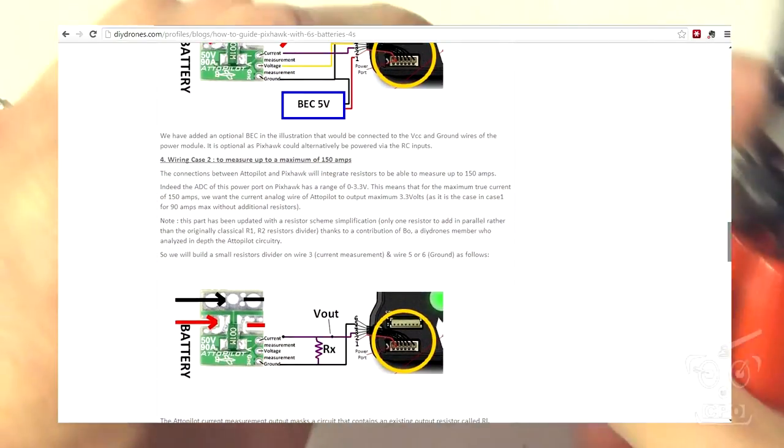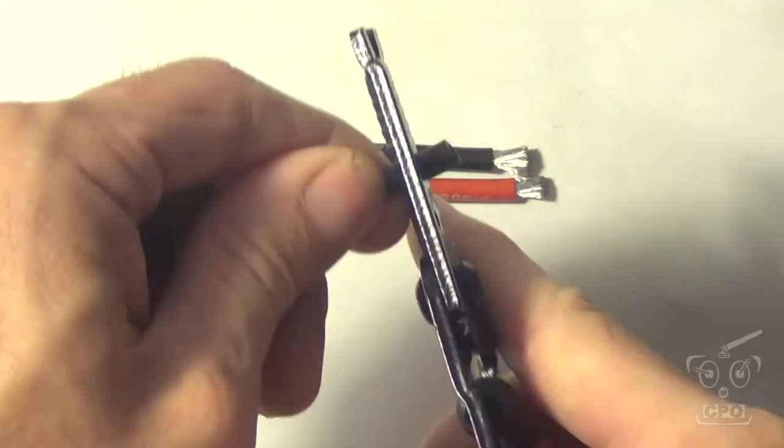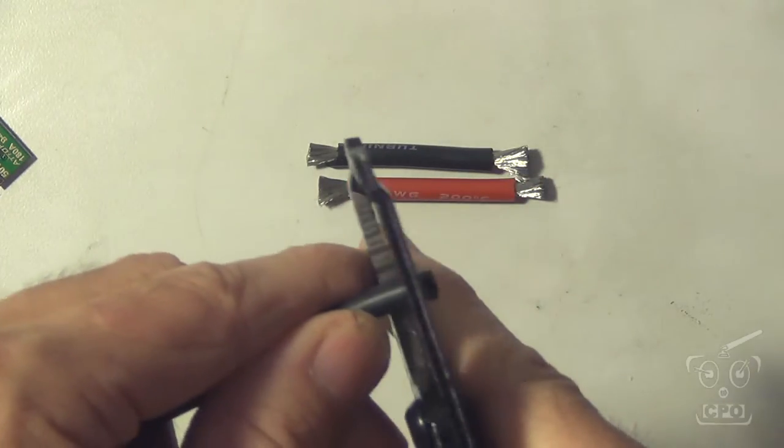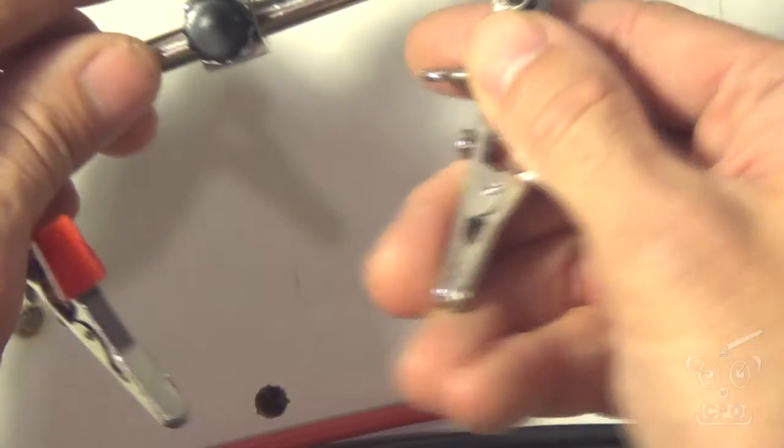but I want the extra current capacity. So I've got two little short 10-gauge sections of wire, one for positive, one for negative, and then a longer 10-gauge that I'm going to use for the battery connection. And basically what I'm going to do is put the two short ones on one side and the two long ones on the other side of this.